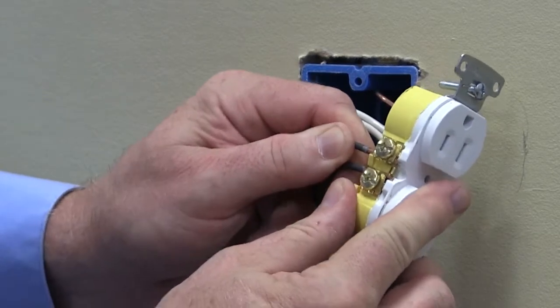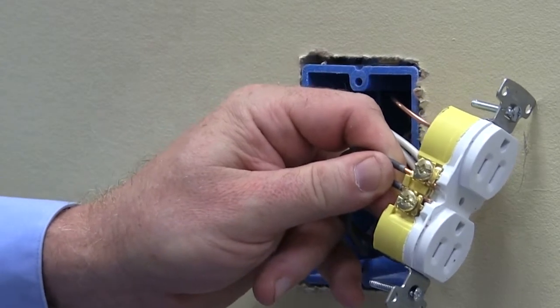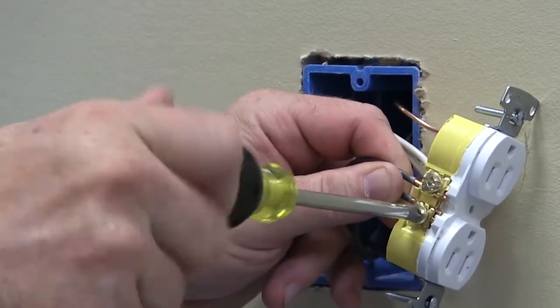Now, take your black wire and follow the same steps but on the brass side. Once positioned and connected, screw down clockwise to terminate the wires.